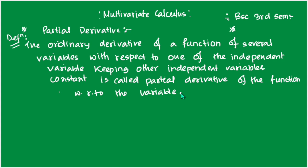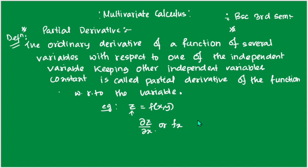So the partial derivative of a function of several variables — for a function of several variables, the partial derivative notation is ∂f/∂x, which means partial derivative. When we partially differentiate the function with respect to x, we treat y as a constant.